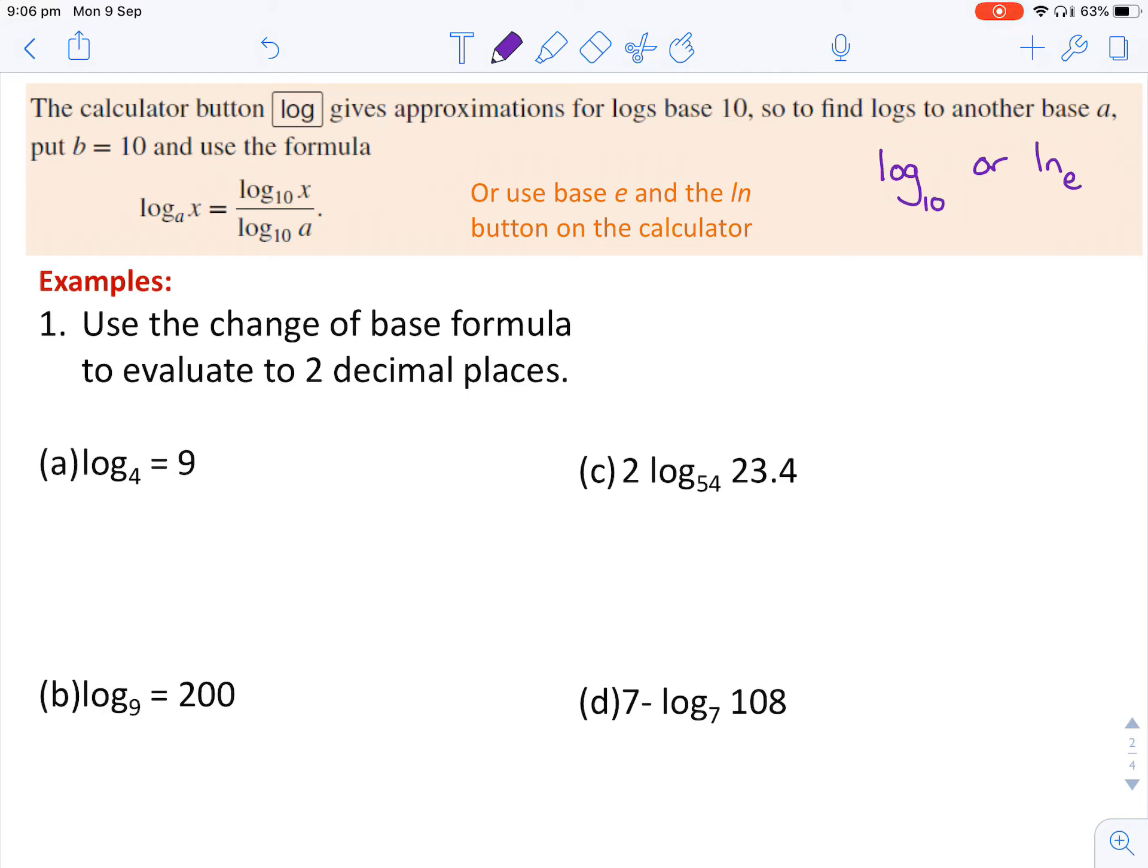So here, using your calculator to evaluate some of these to two decimal places, the first thing you need to do is rewrite it using the base change. So that's log of nine over log of four. And here, I've written log. So in the calculator, I'll use the log button.